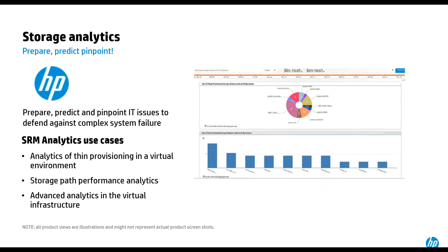In the area of storage analytics, we collect a massive amount of storage data. When we correlate this data, we want to help customers analyze and in the future predict areas of concern in the storage environment. For example, if you have metric A on a switch and metric B on an array, how can we correlate those to offer insight into the SAN? This is especially useful in the area of virtualization where customers have thin-provisioned storage on a virtual server environment.